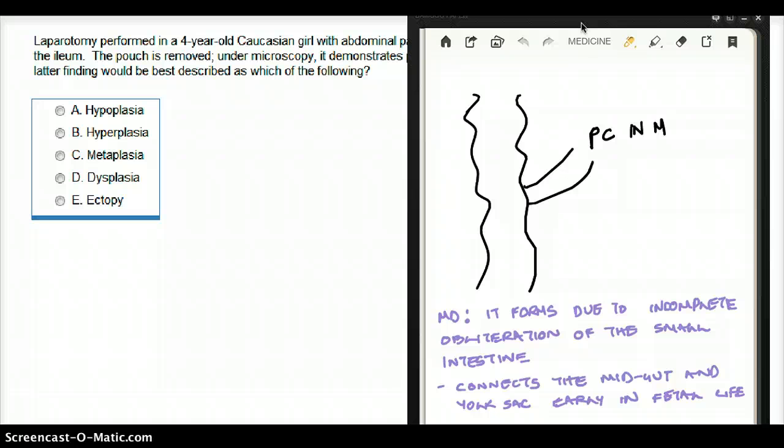Initially, this was called the omphalomesenteric duct. The omphalomesenteric duct connects the yolk sac to the midgut. So usually the yolk sac is outside.